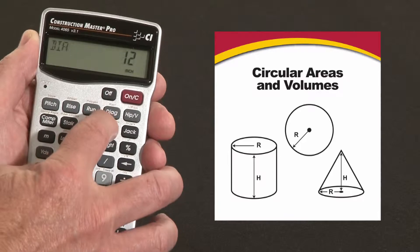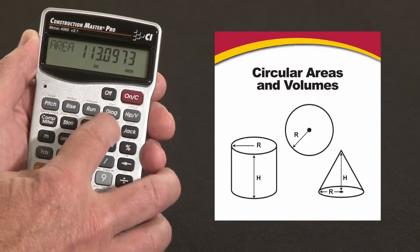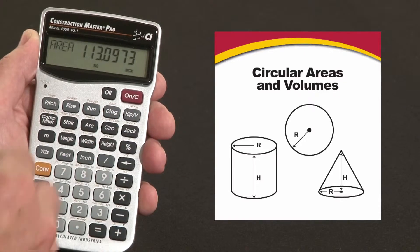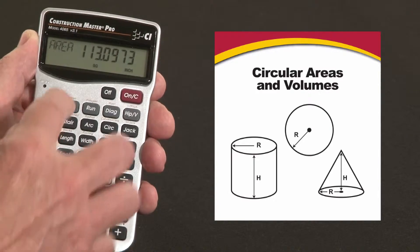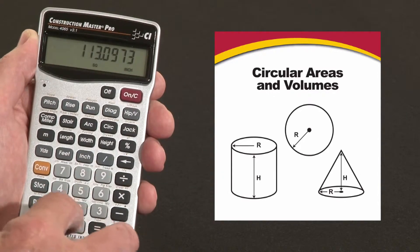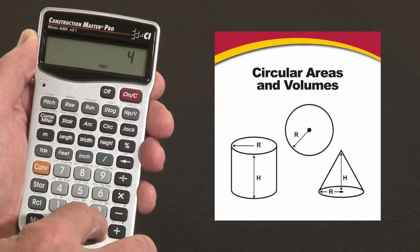Say we want to do a 12-inch diameter sonotube, 4 feet high. Going back through that cycle, diameter is 12 inches. So this square inch times 4 feet equals